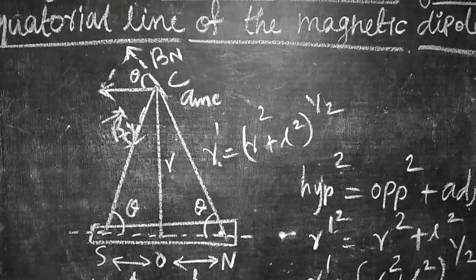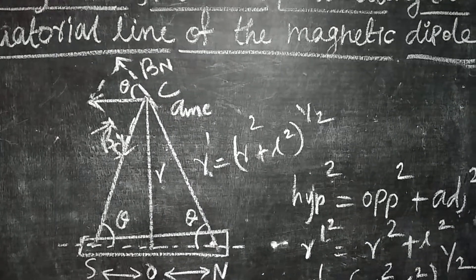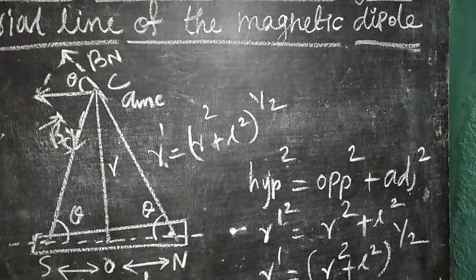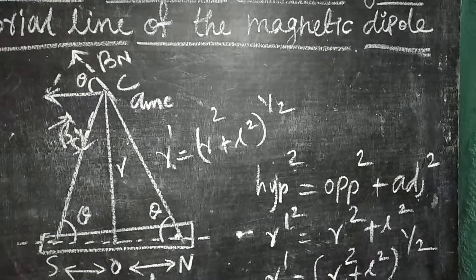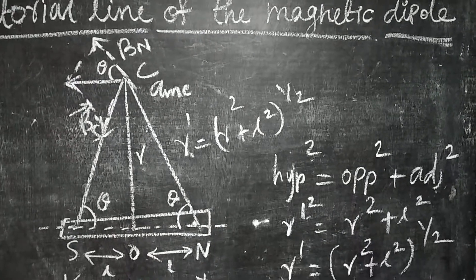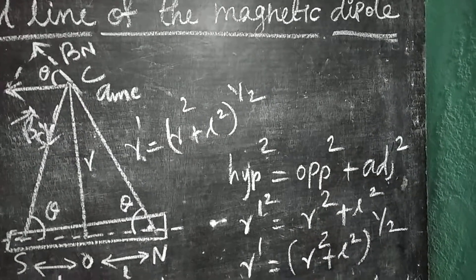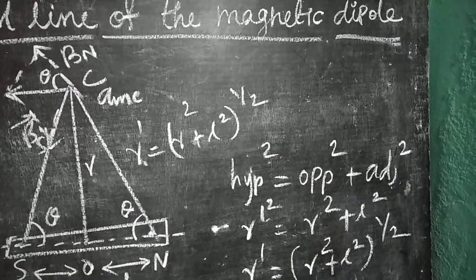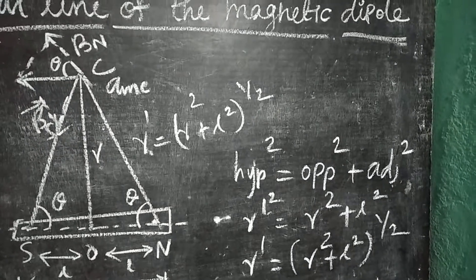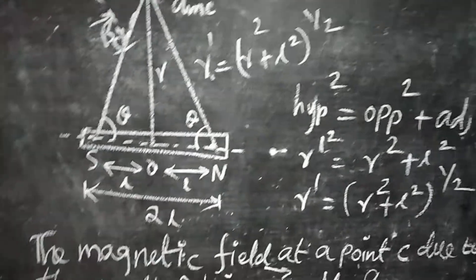Here, R prime squared is equal to R squared plus L squared. This equation is obtained by Pythagoras theorem: hypotenuse squared equals opposite side squared plus adjacent side squared. The hypotenuse is R prime, opposite side is R, and adjacent side is L. Substituting these values: R prime squared equals R squared plus L squared, so R prime equals the square root of R squared plus L squared.